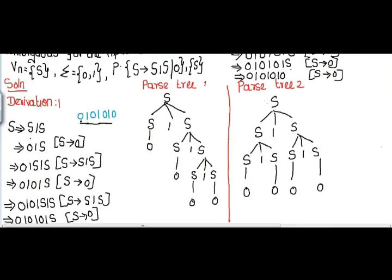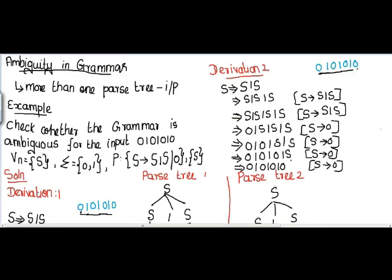If I compare parse tree 1 and parse tree 2, I can see a difference. The first level has S in both, and the second level has S1S in both. But at the third level there is a difference: in parse tree 1 it is 0 S1S, but in parse tree 2 it is S1S S1S. So parse tree 1 is different from parse tree 2. Since we can draw more than one parse tree for the given input using this grammar, hence this grammar is ambiguous.